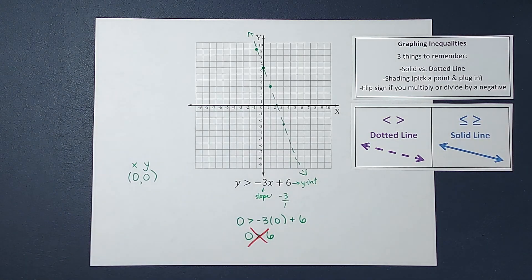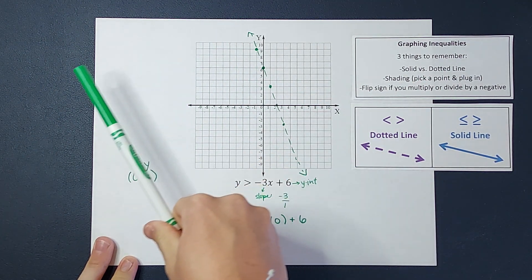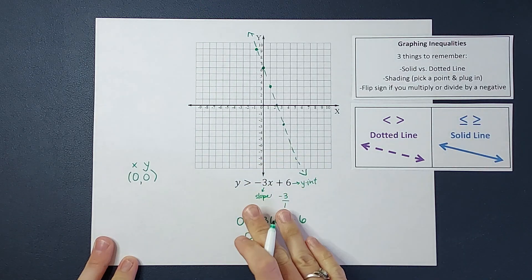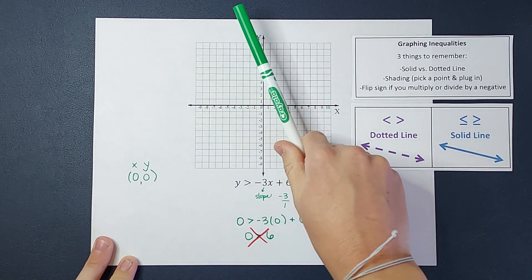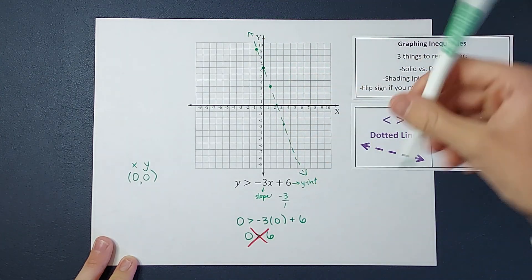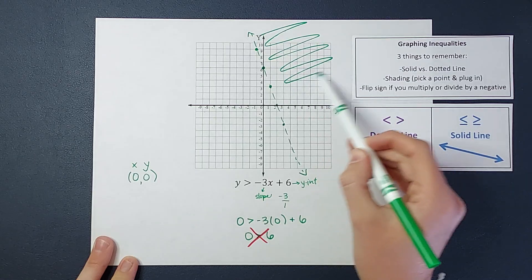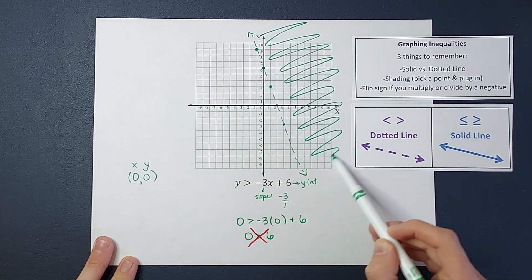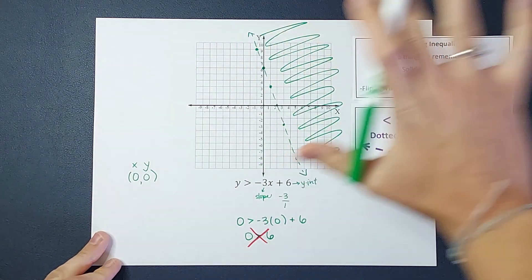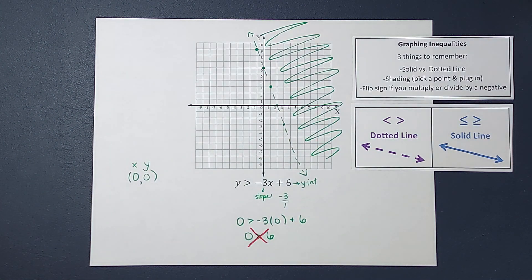So that means the answers on this side of the line, where 0, 0 is, none of these will work for this equation. But all the ordered pairs on this side, and remember, this goes on forever, will work. So we shade it in. I'm not going to waste my marker shading it all in, but you get the idea. All the answers over there will work for this inequality.